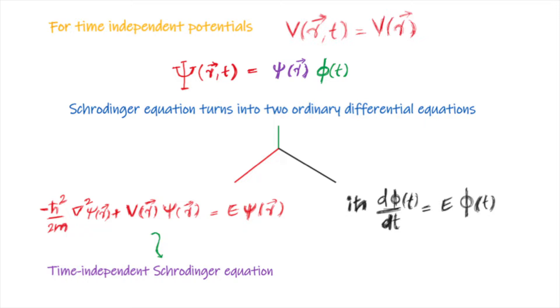Then, the separation of variables will decouple the Schrödinger equation, which is a partial differential equation into two ordinary differential equations. One depending on the space coordinates r only and this is commonly known as time independent Schrödinger equation. The other equation is iℏ d/dt φ = E φ. This equation contains time only.